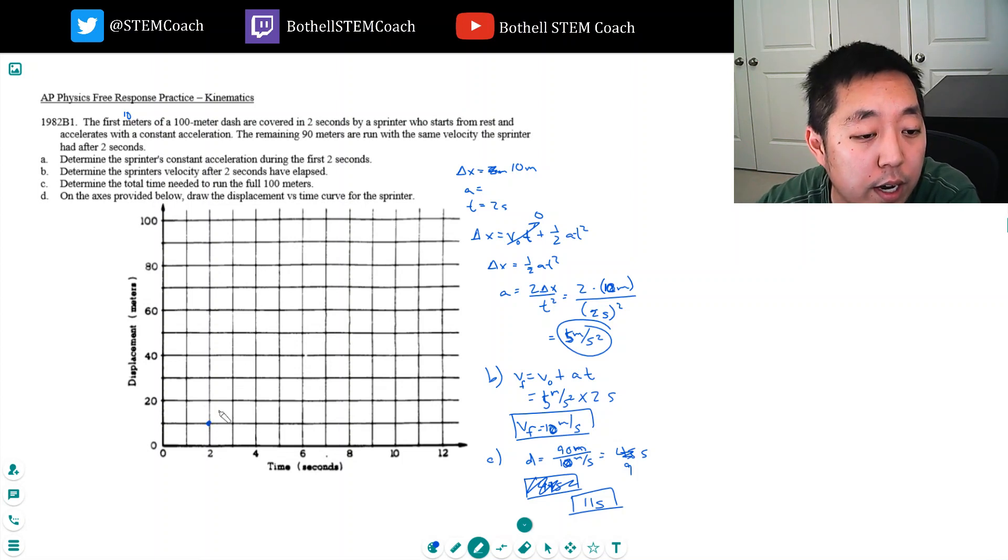So I know he goes up to there, and he's accelerating constantly, so it's like this, it's like a quadratic for his position.